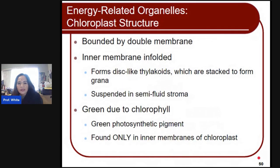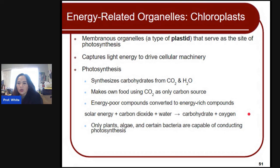Chloroplast structure is found in plant cells and is bounded by a double membrane. The inner membrane is enfolded to form disc-like thylakoids, which are stacked to form grana, suspended in a semi-fluid stroma. It is green due to chlorophyll, a green photosynthetic pigment found in the inner membranes of the chloroplast. The chloroplast is a membranous organelle that serves as the site of photosynthesis — it captures light energy to drive cellular machinery.